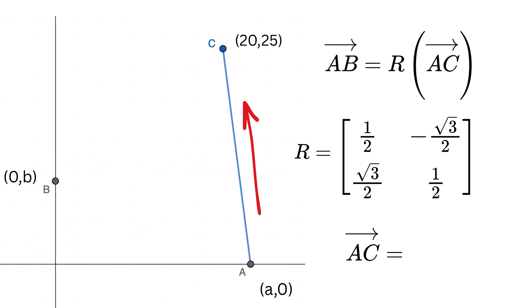Now, the vector AC can be written as the coordinate of C minus the coordinate of A, or (20,25) minus (a,0), which equals (20-a, 25), and we can write it as this vector.